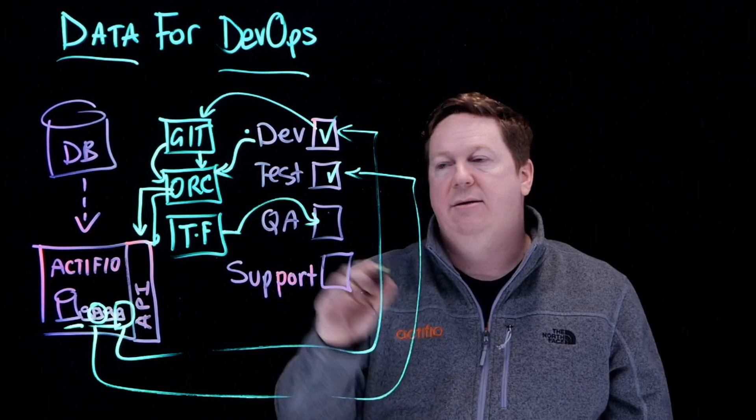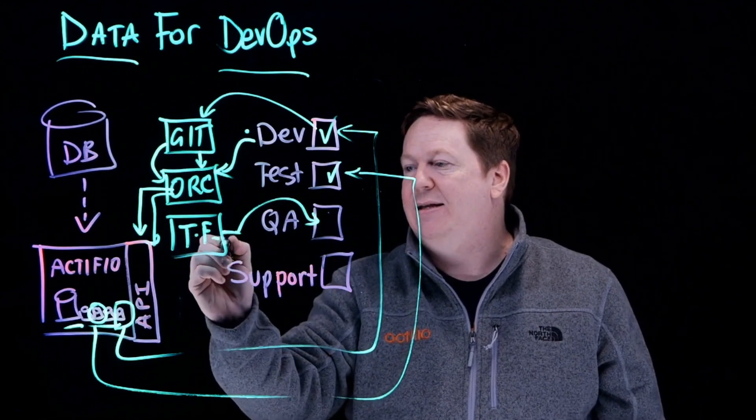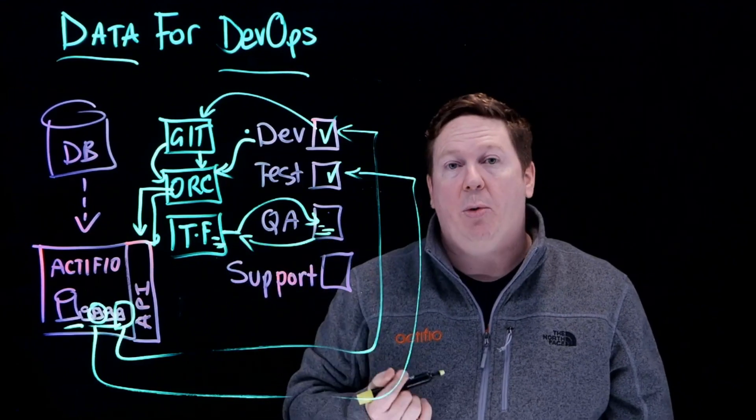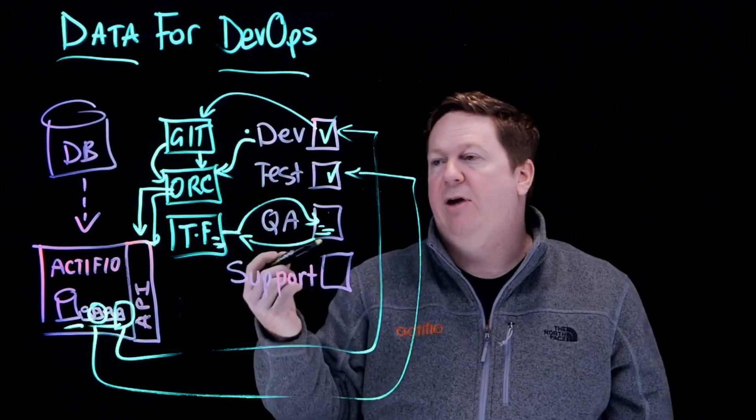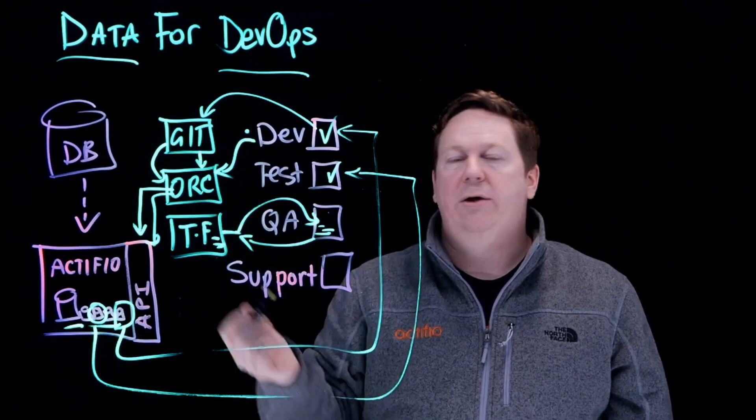Which mounts the data into the QA environment, pulls together the latest source code changes, the latest test patterns, and applies them over the top so that the teams can get back a daily report of updates from developers, latest production-grade data, latest test patterns, all in an automated fashion.